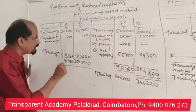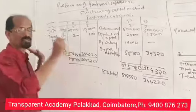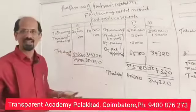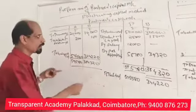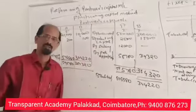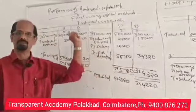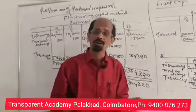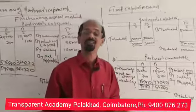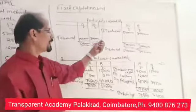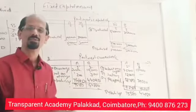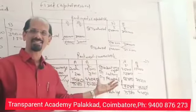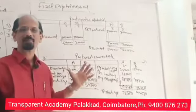The closing balances of 5,75,580 and 3,44,220 show that the capital has changed — this is called the fluctuating capital method. That balance will be brought down for the next year. Now, if you do the same problem under the fixed capital method, how will you do it? Under fixed capital method, two accounts are prepared: the Partners Capital Account and the Partners Current Account.